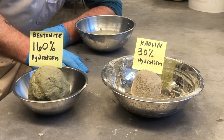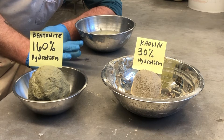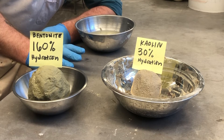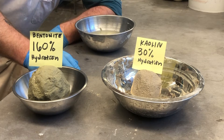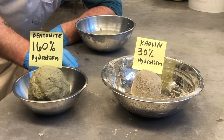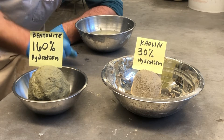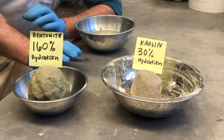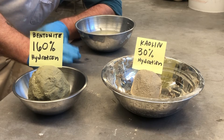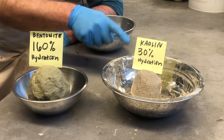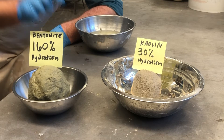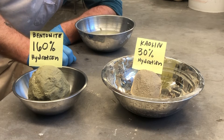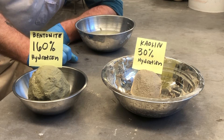I'm here in the glaze lab and I've just taken two of our primary clays. We've got kaolin in the form of EPK or Edgar Plastic Kaolin, and I've got bentonite. Again, these are both primary clays. For the kaolin, the parent rock would be a feldspar, and for the bentonite, the parent rock would be some sort of volcanic ash.